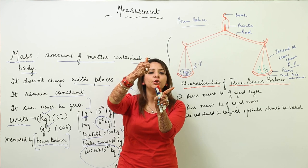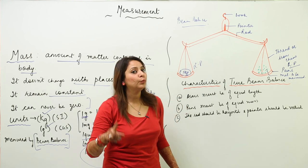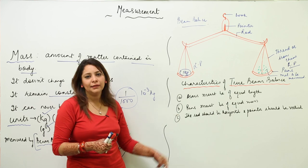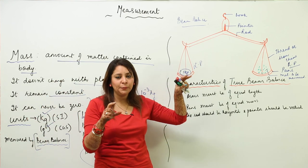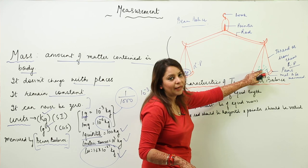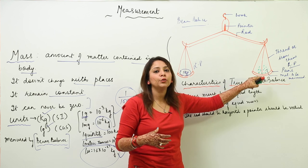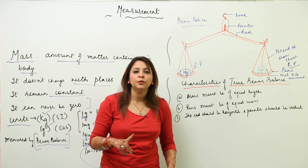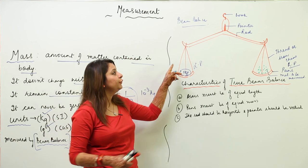If the dal is more than 1 kg, the pan tilts to the right and the pointer bends to that side. The grocer removes some dal until the pointer becomes vertical. When the pointer is vertical, it indicates both pans have equal mass. At that point, the pointer is vertical and the rod is horizontal — confirming both sides are equal.